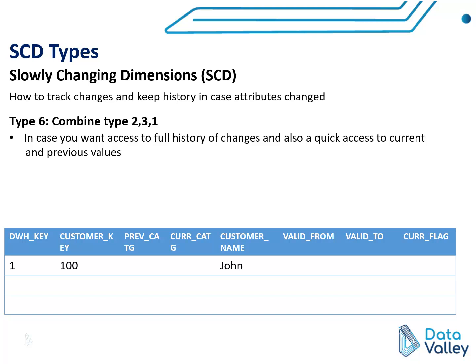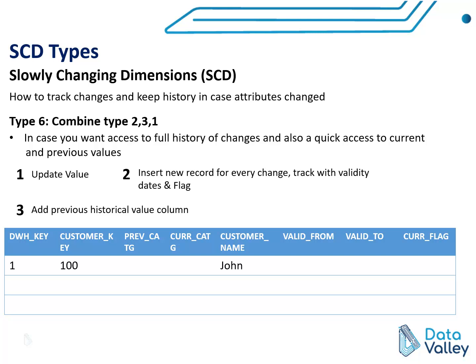The last type we will discuss in SCD, or slowly changing dimensions, is Type 6. Type 6 is actually a combination between Type 1, Type 2, and Type 3. It has Type 1 because we update old values, Type 2 because for every change we insert a new record with valid dates and flags, and Type 3 because we add a historical column for the previous value.